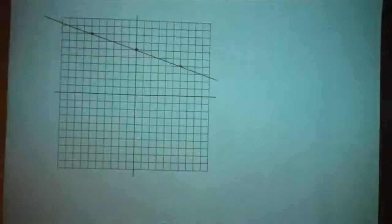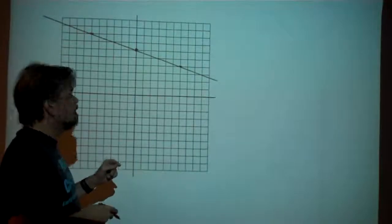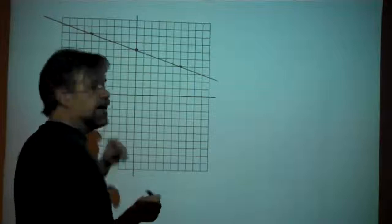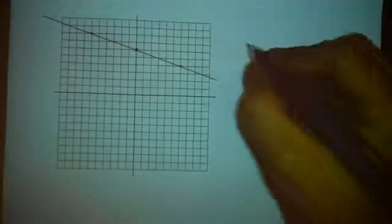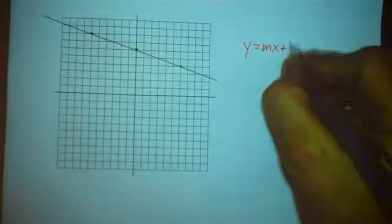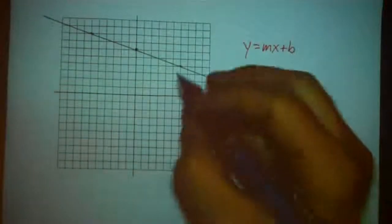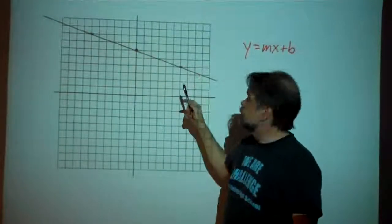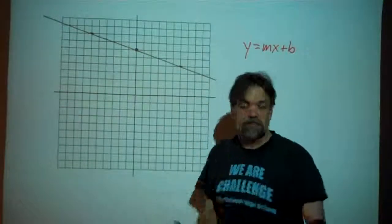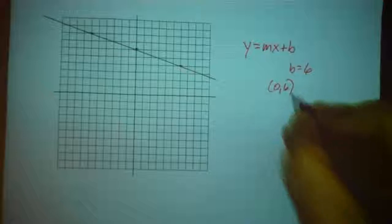This time we already have a line, so we need to come up with an equation that matches it. We'll go in reverse order — find our slope and y-intercept, then create the equation. The equation will look like y equals mx plus b, so we need to find m and b. I can find b easily: the y-intercept is where the line crosses the y-axis, which is the point (0, 6), so b equals 6.